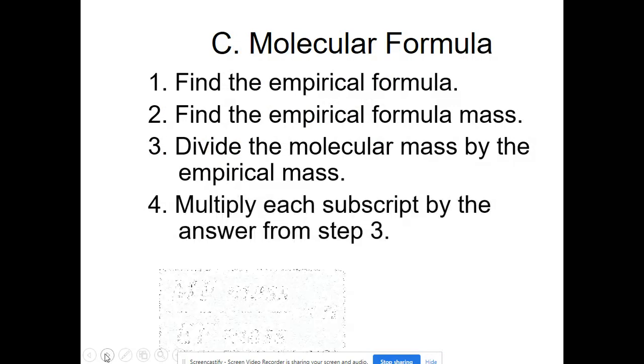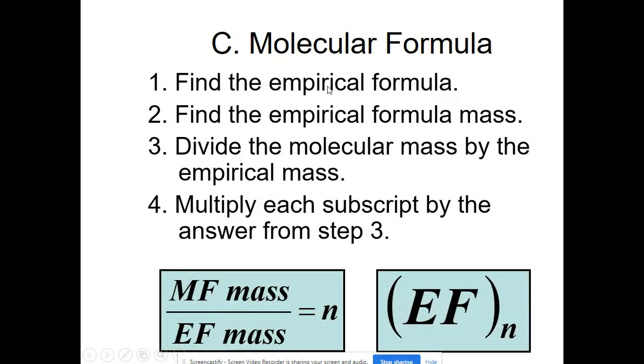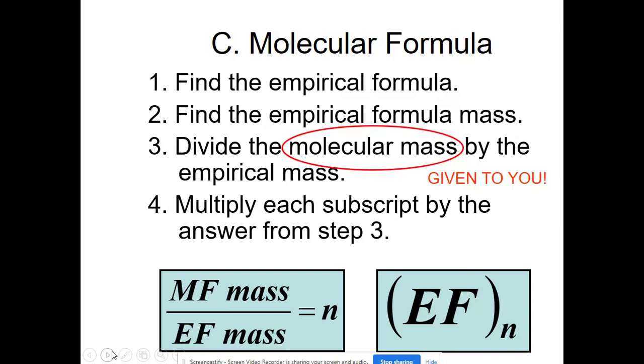So the first step when you're doing these kind of problems is to find the empirical formula. Then we're going to find the empirical formula molar mass or formula mass. We're then going to divide the molecular mass that will be given to us by the empirical mass that we just calculated. And then we're going to multiply each subscript in our empirical formula by the answer that we got in step 3. The molecular mass is going to be given to you. You have to calculate the empirical formula mass.